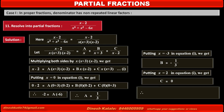Therefore, the given fraction x minus 2 upon x(x plus 3)(x minus 2) equals, substituting the values: A equals 1 upon 3, so the first term becomes 1 upon 3x; B equals minus 1 upon 3, so the second term becomes minus 1 upon 3(x plus 3); and the third term becomes 0 because C equals 0.